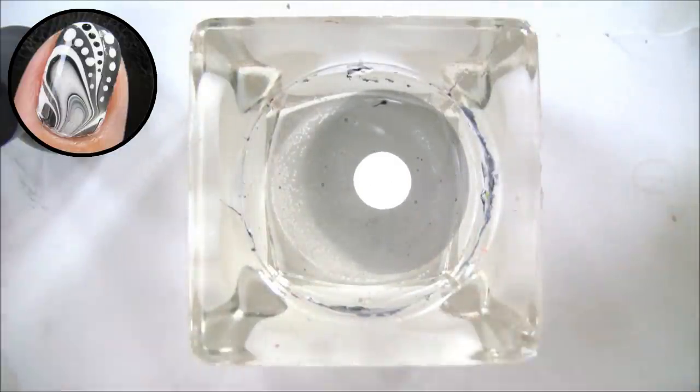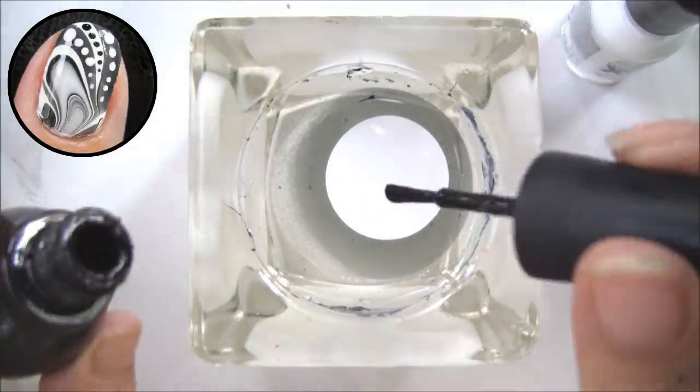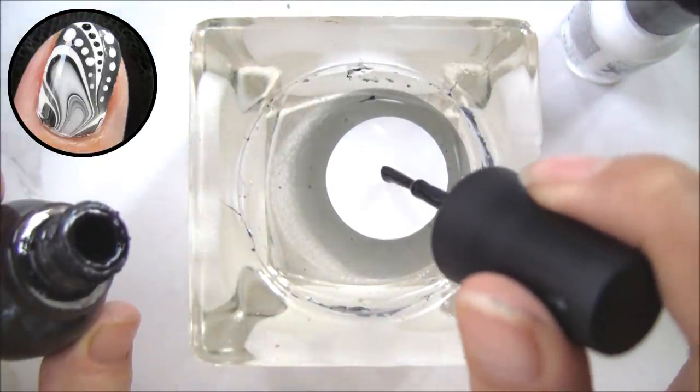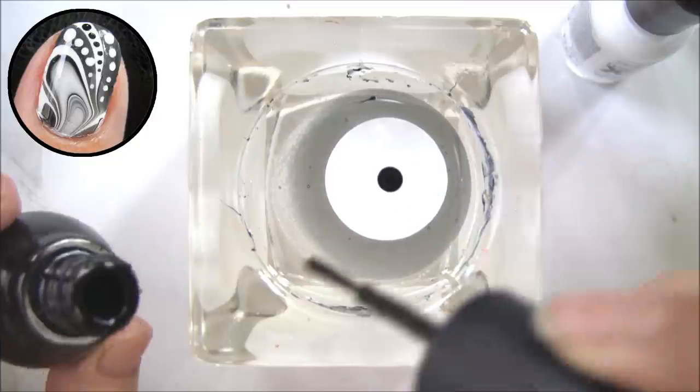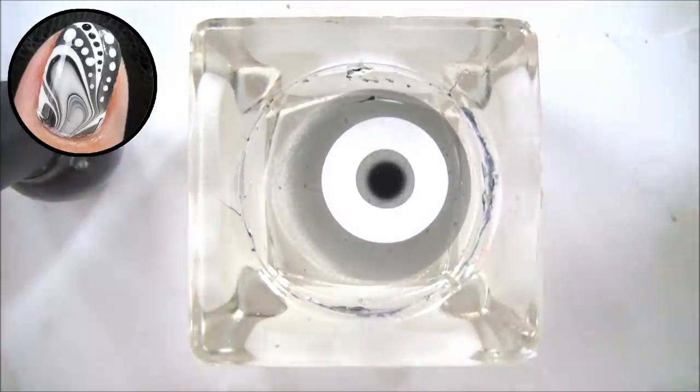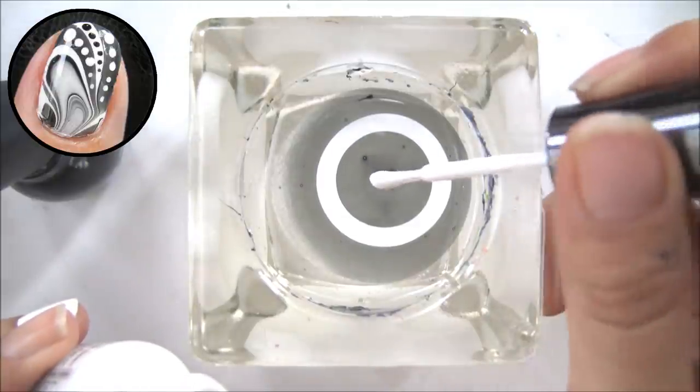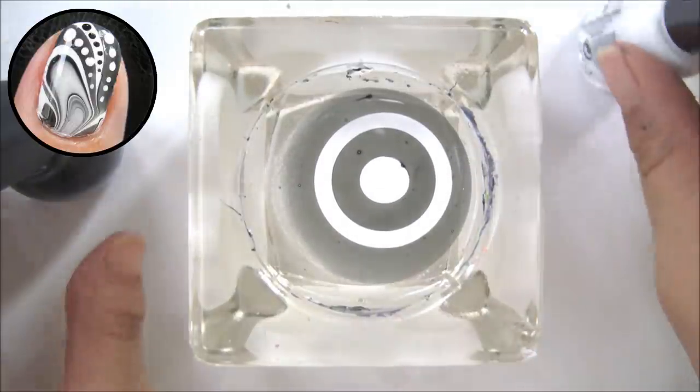Add one drop and wait for that to spread. Then continue with a drop of the white polish and repeat steps until you get a few rings of each color. I recommend not dripping it from too high, otherwise it will sink to the bottom of the cup.